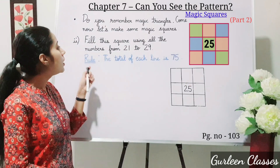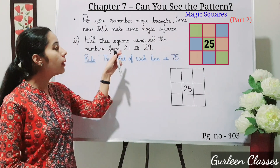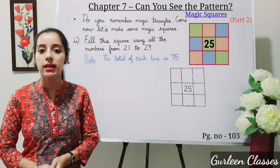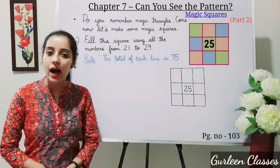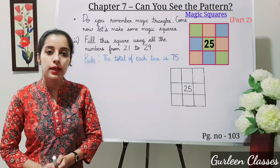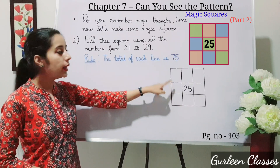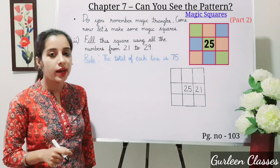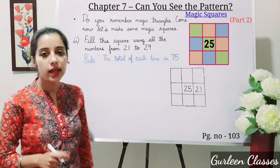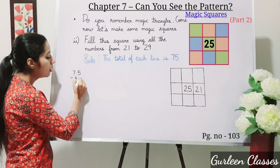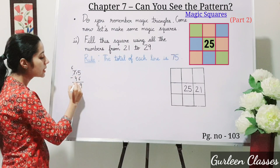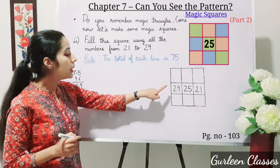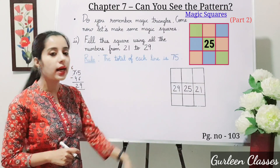Now let us do the second part. Fill the square using all numbers from 21 to 29, with the total of each line being 75. Only one number, 25, is given. Let us take 21 in this row. 25 plus 21 is 46, and 75 minus 46 is 29. So we write 29. Then 46 plus 29 is 75.